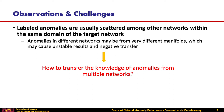In the meantime, labeled anomalies usually scattered among other networks within the same domain of the target network. For example, LinkedIn and Indeed have similar social networks that represent user friendship in the job search domain. So, we could further explore such valuable auxiliary knowledge of anomalies. But anomalies in different networks may be from very different manifolds, which may cause unstable results and negative transfer. As learning from multiple networks could provide more comprehensive knowledge, how to transfer the knowledge of anomalies from multiple networks is a critical challenge to be solved.